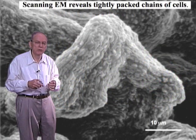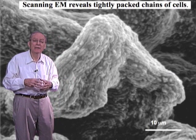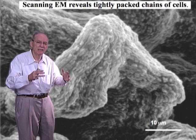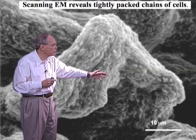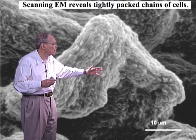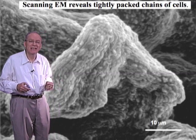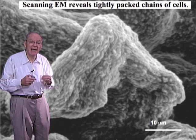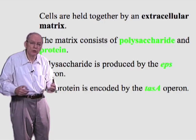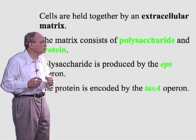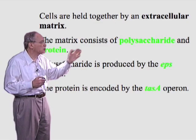Looking even more closely at this aerial structure by scanning electron microscopy, we can see that the biofilm consists of long chains of cells cemented in parallel fashion to each other. The glue that holds all these chains of cells together is known as the extracellular matrix. The bacteria export a matrix material that cements the chains of cells together so that the architecture can be built. This matrix consists of a polysaccharide — a so-called exopolysaccharide — and a specific protein.